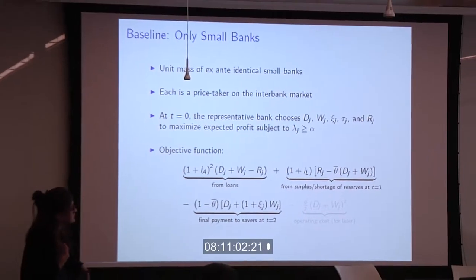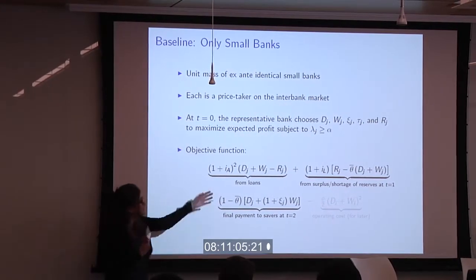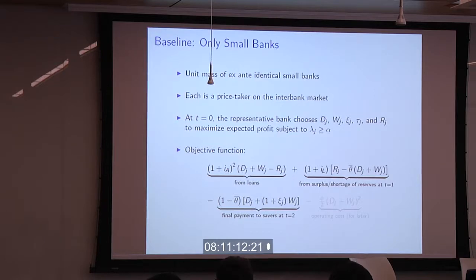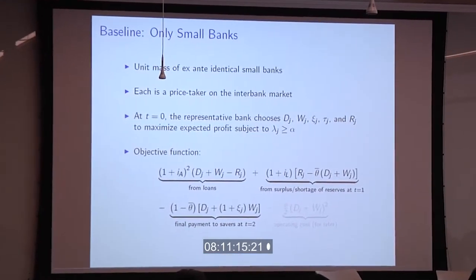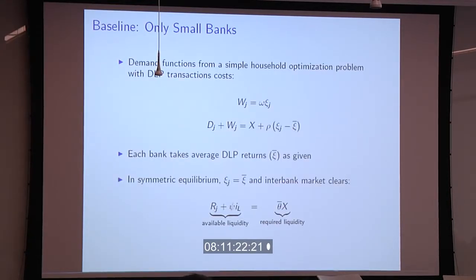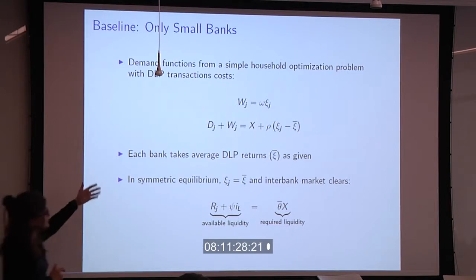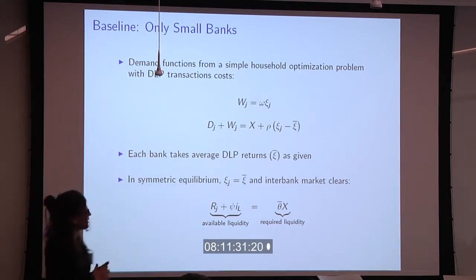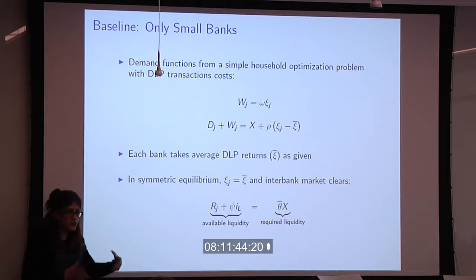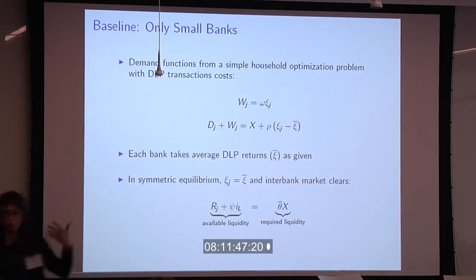At the initial date t=0, banks choose how much funding to attract in different forms, how much to move off balance sheet, and how to allocate assets between liquid and illiquid to maximize profits subject to the liquidity minimum. We write down a household optimization problem that delivers demand functions from households as a function of the interest rates offered by the banking sector. Each bank takes as given what other banks are doing, and the interbank market clears so that total liquidity available equals total liquidity demanded.